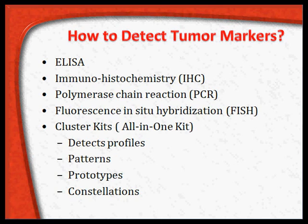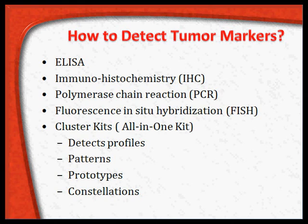We have discussed the various types of tumor markers, what different classes they belong to. Now, how to measure or detect these tumor markers — they may be present in the serum or in the tissue. The fundamental method used in the lab to detect tumor markers is the ELISA test.